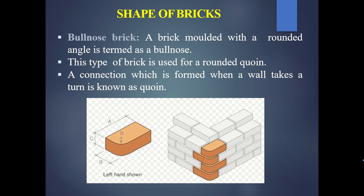Coming to the first one, which is a bullnose brick. A bullnose brick is the brick which is molded with a rounded angle in the front. You can see in the diagram — the surface or the front part of the brick is molded in a rounded angle, like a fillet shape. That's called a bullnose brick.